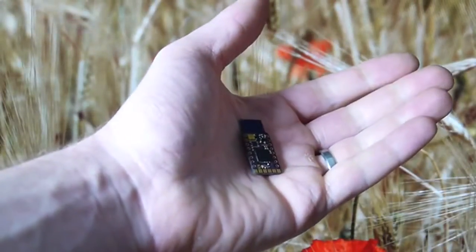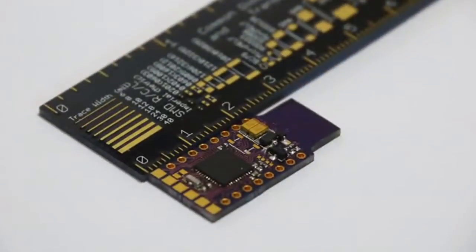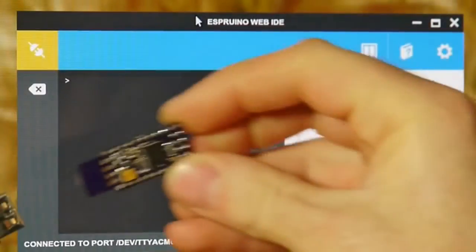This is Espruino Pico, the tiny JavaScript computer on a USB stick. Just plug it in and get started in seconds.